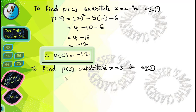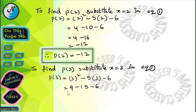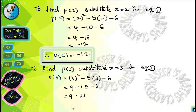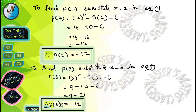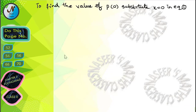To find the value of p(3), substitute x is equal to 3 in equation 1. Then we get p(3) is equal to 3 square minus 5 into 3 minus 6. After simplification, 3 square is 9 and 5 into 3 is 15, so we get 9 minus 15 minus 6, which gives 9 minus 21 equals minus 12. Therefore, p(3) is equal to minus 12.